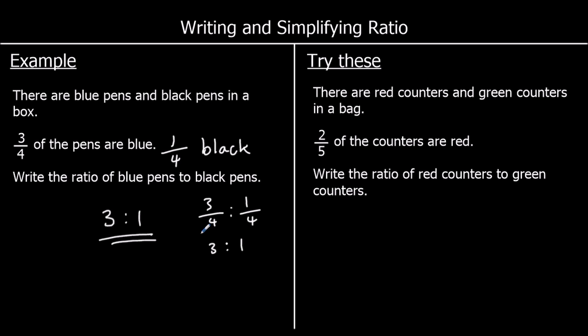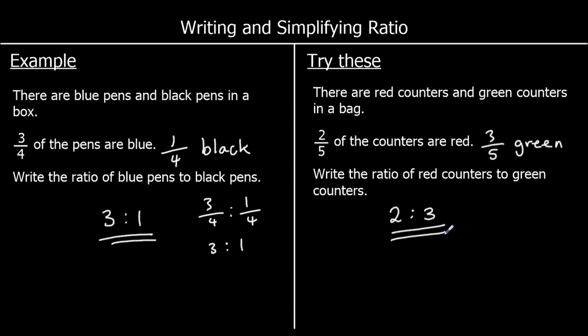One for you to try, so give this one a go. There are red counters and green counters in a bag. Two fifths of the counters are red. So what is the ratio of red counters to green counters? If two fifths are red — 2 out of every 5 are red — the rest are green, so three fifths must be green, because two fifths and three fifths make a whole. So out of every 5 counters, we're going to have 2 red and 3 green. The ratio is 2 to 3. Two fifths to three fifths is the same as 2 to 3.